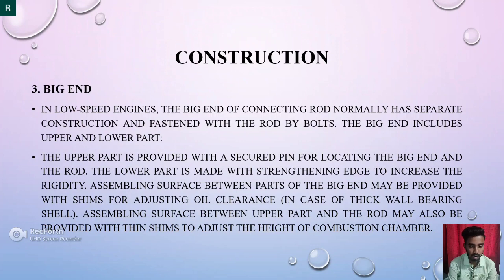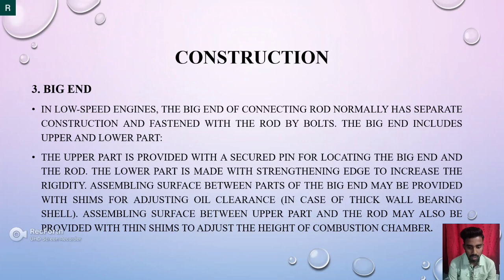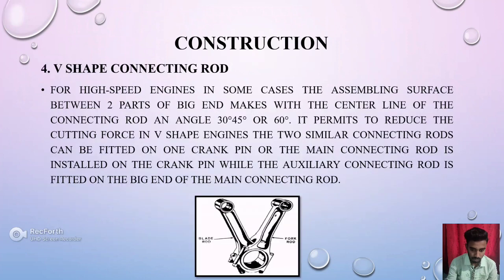Third is the big end. In low speed engines, the big end of the connecting rod normally has a separate construction and is fastened to the rod by bolts. The big end includes an upper and lower part. The upper part is provided with a securing pin for locating the big end to the rod. The lower part is made with a straightening edge to increase rigidity. The assembling surface between parts of the big end may be provided with seams for adjusting oil clearance. In the case of a thick wall bearing shell, the assembling surface between the upper part and the rod may also be provided with thin seams to adjust the height of the combustion chamber.